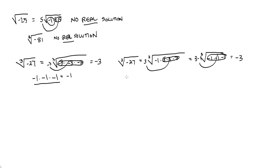So any time we have an odd index — an odd root — and the number inside is negative, that can actually be answered. It's only when the root is even that we cannot get a real solution from a negative under the radical.